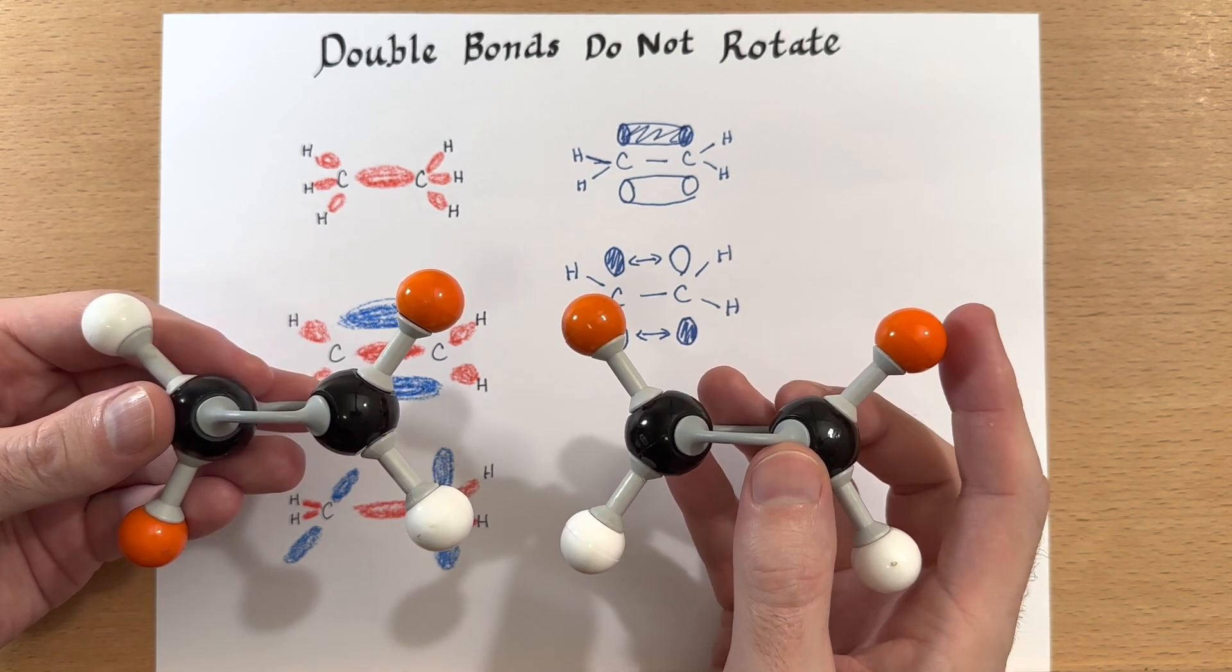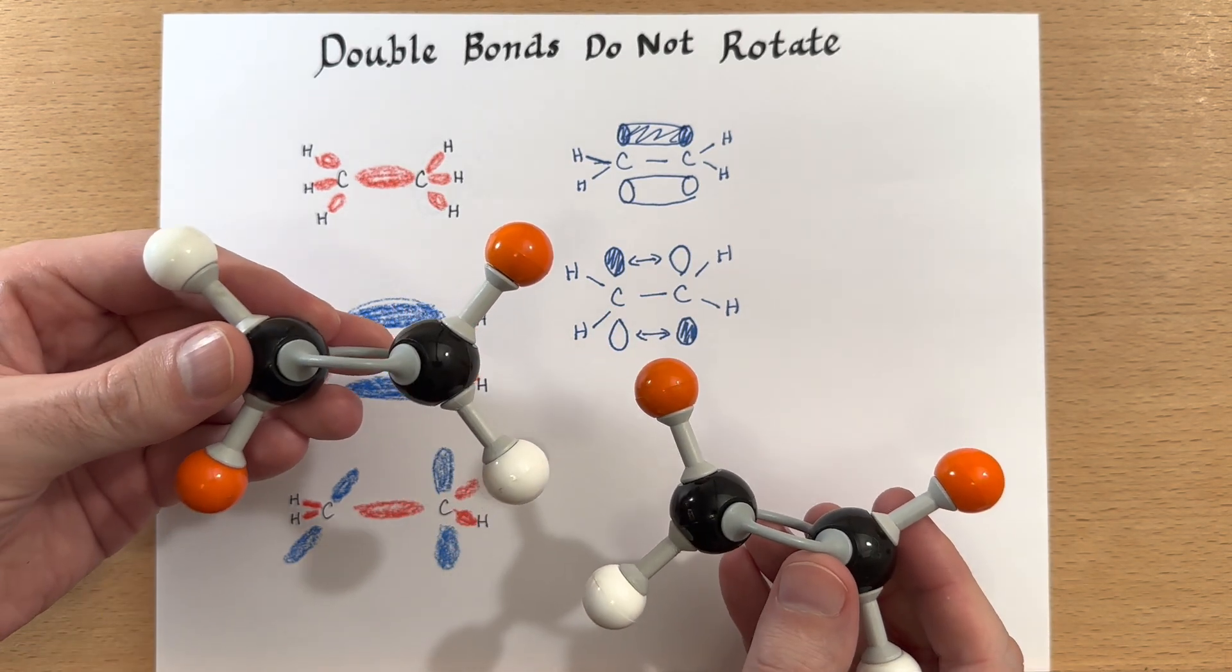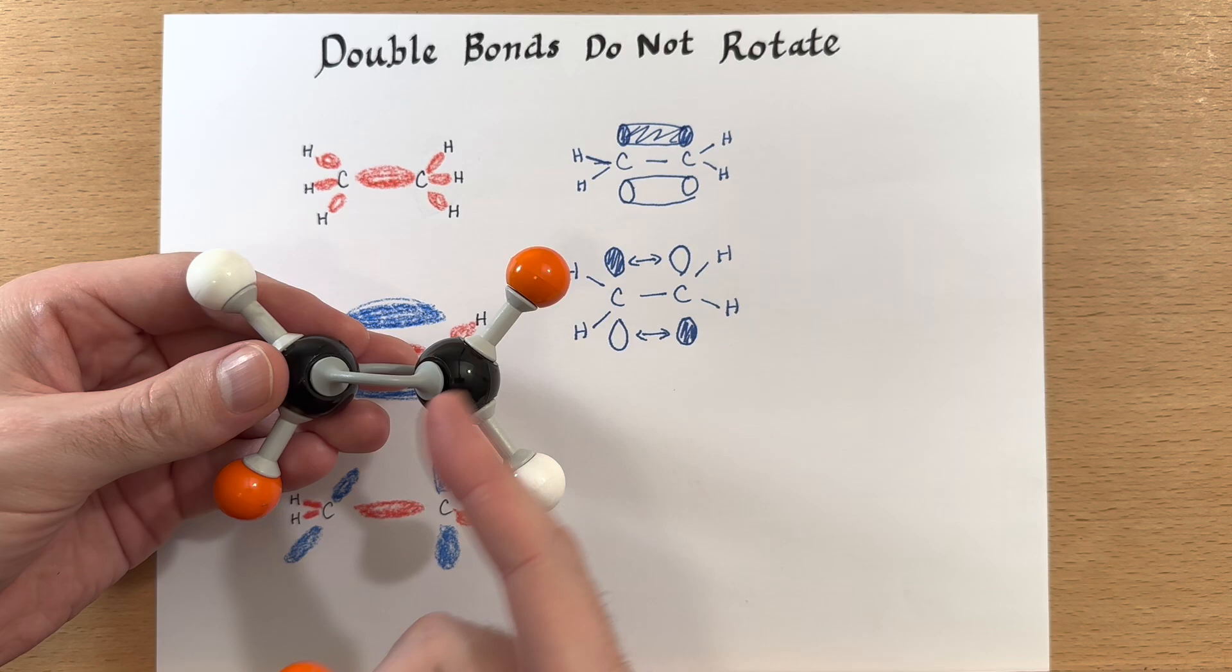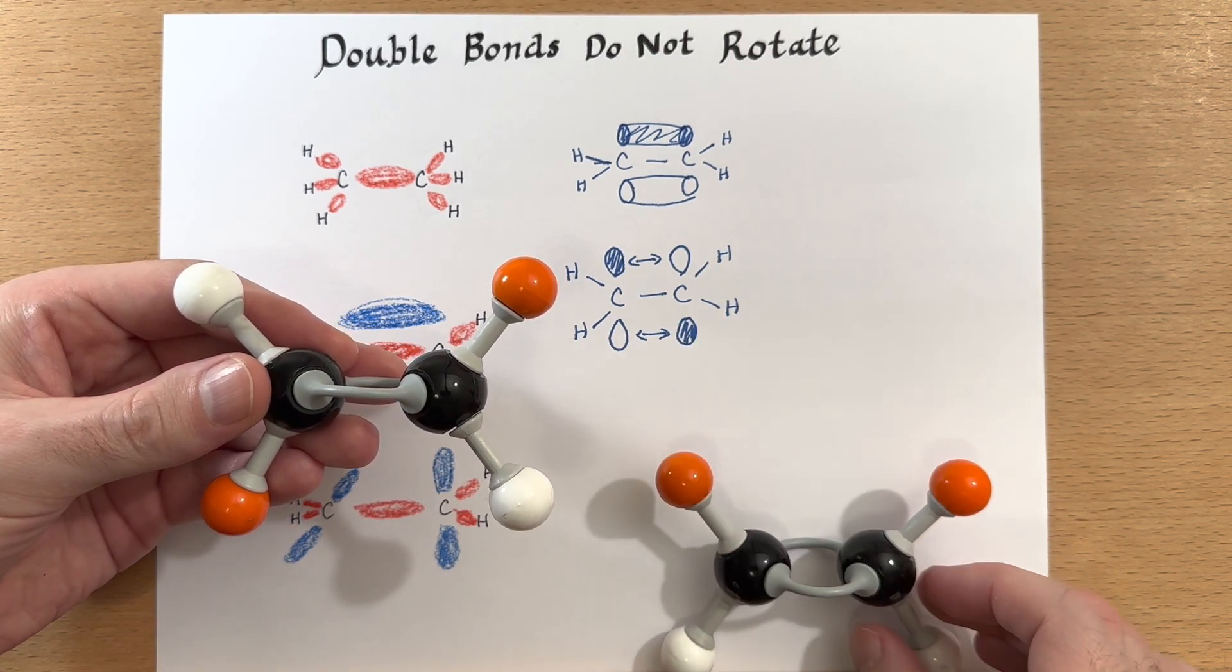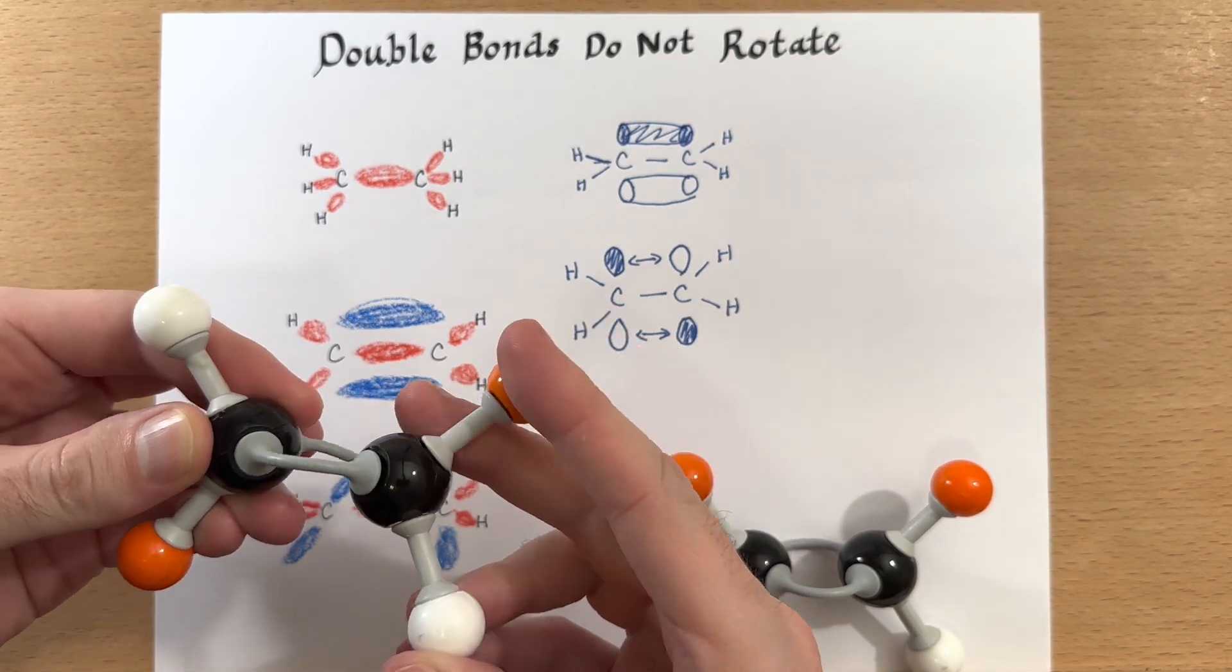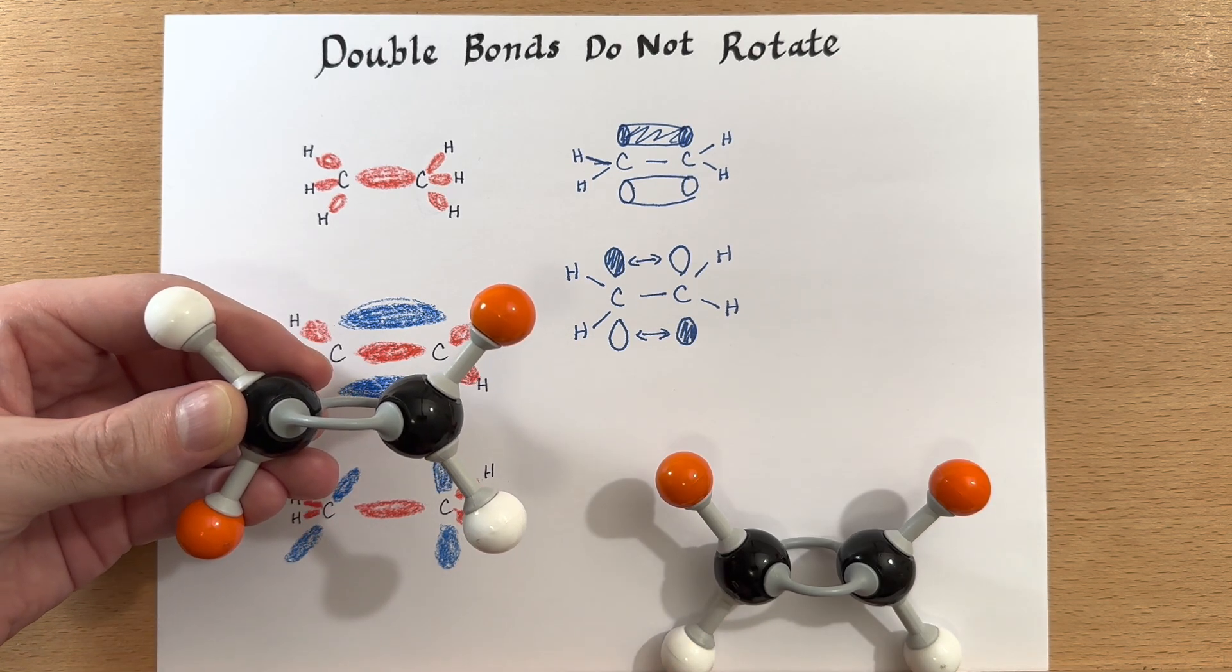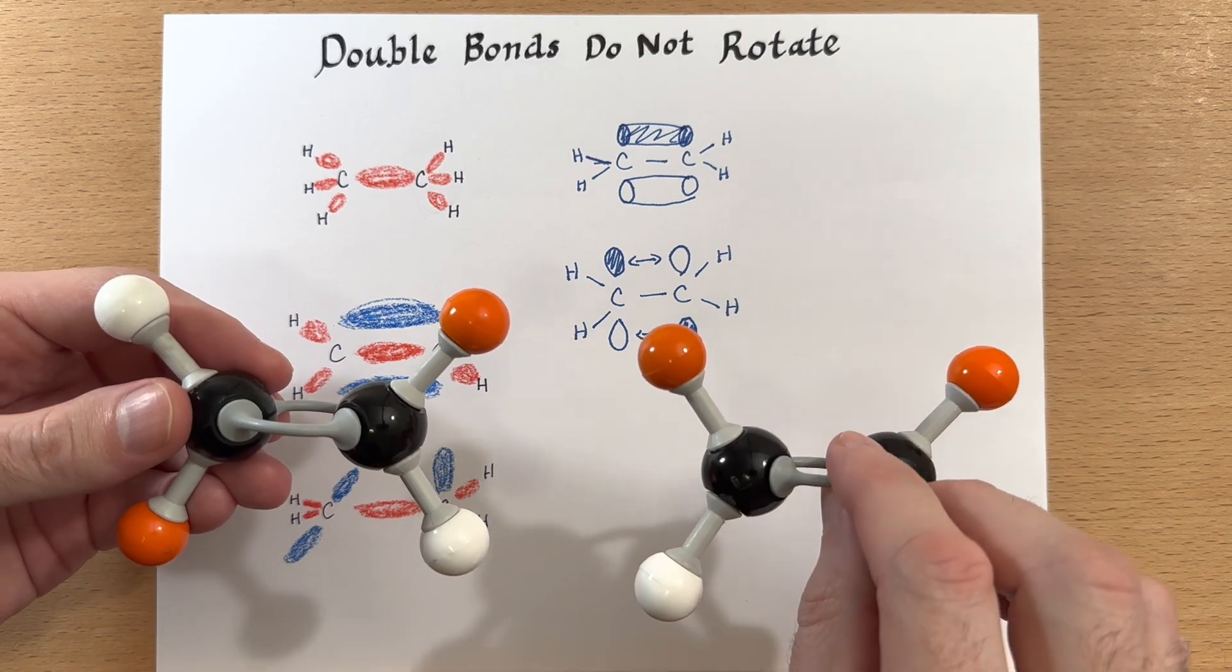In this case, they're on the same side, or in the cis configuration. And in this case right here, we have the trans configuration, or on opposite sides of where it started. And we are unable to rotate this bond to get it into the other configuration. So these are two chemically distinct molecules.